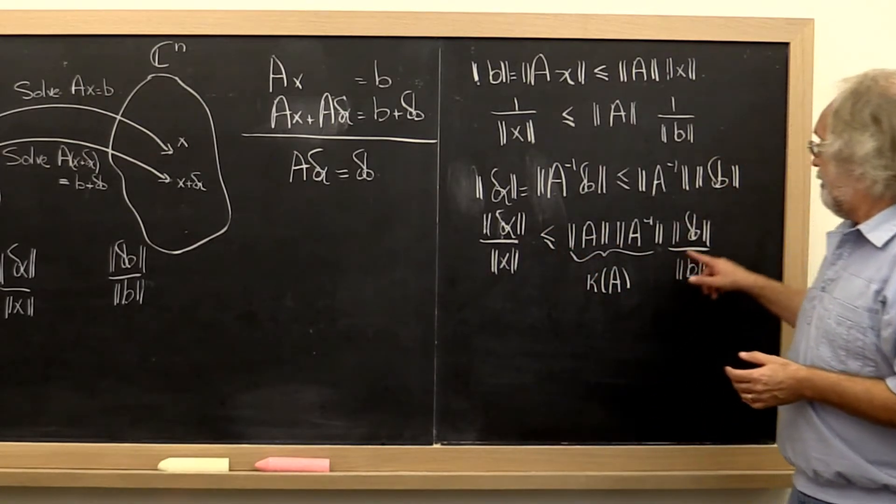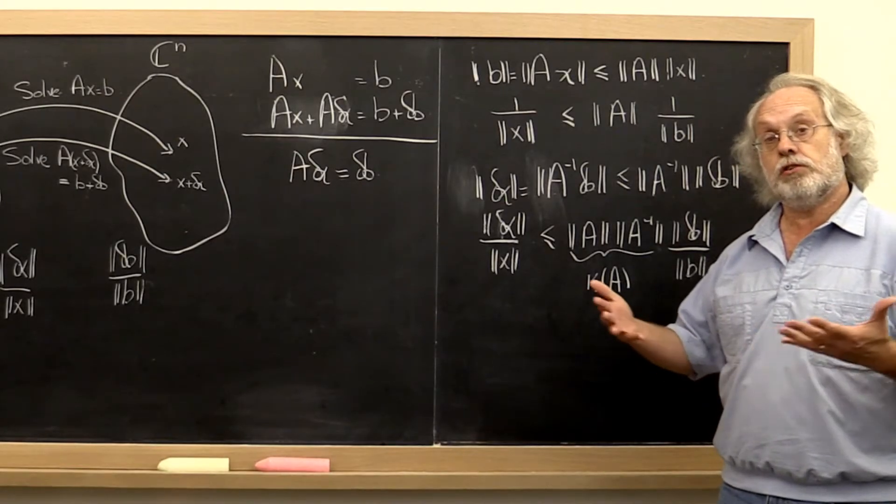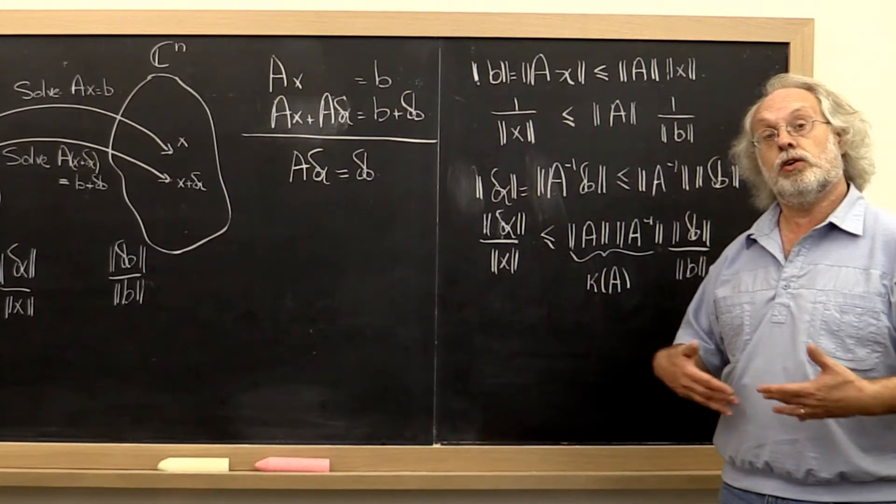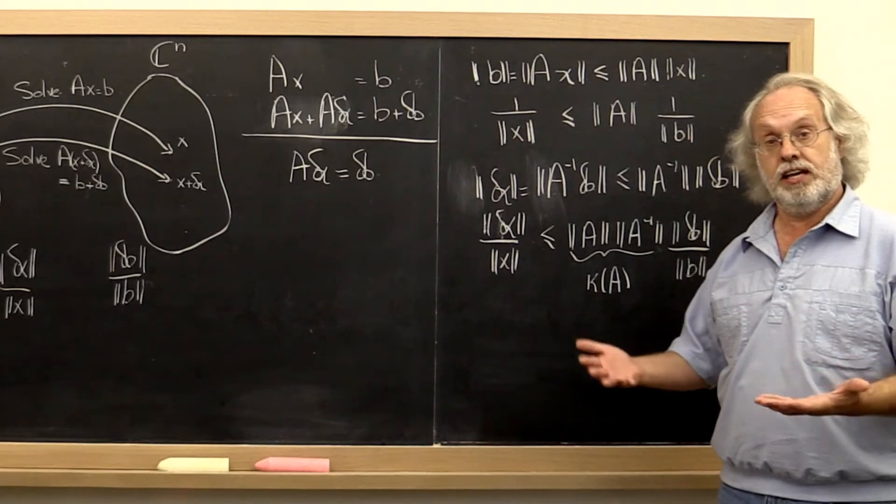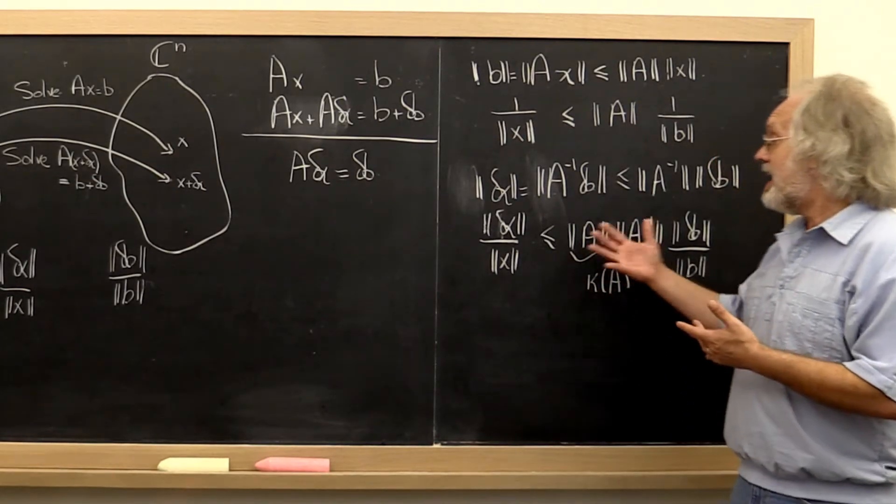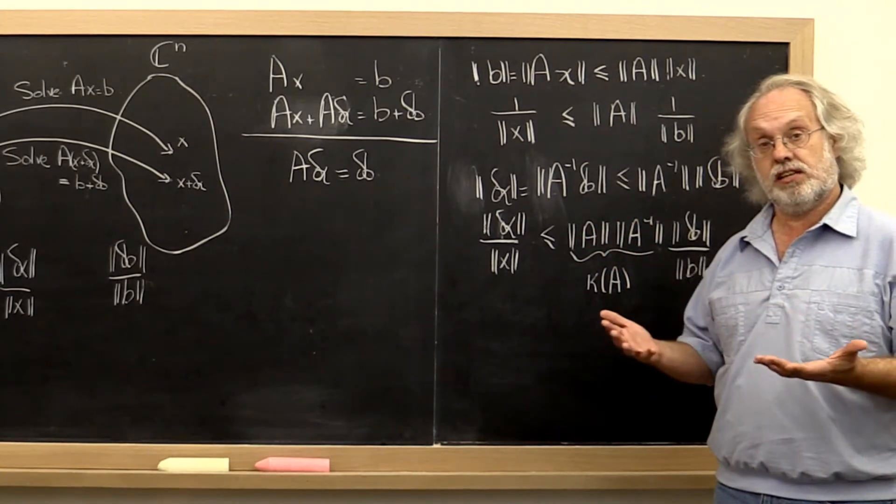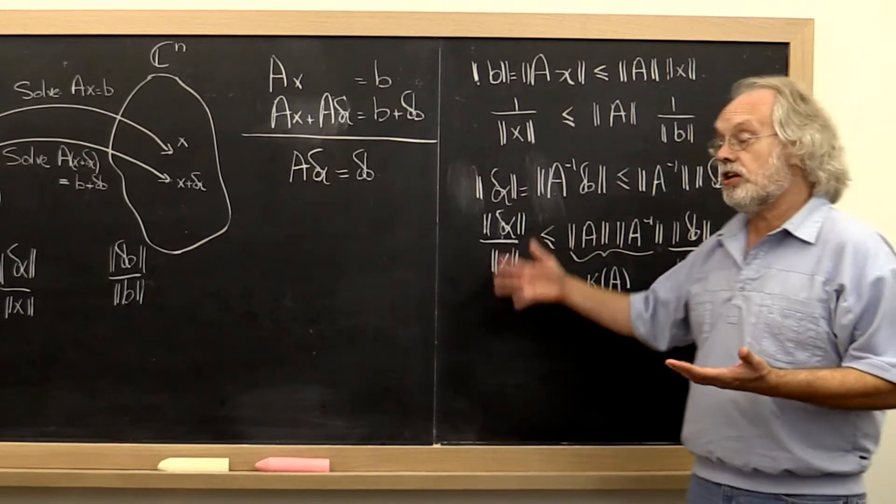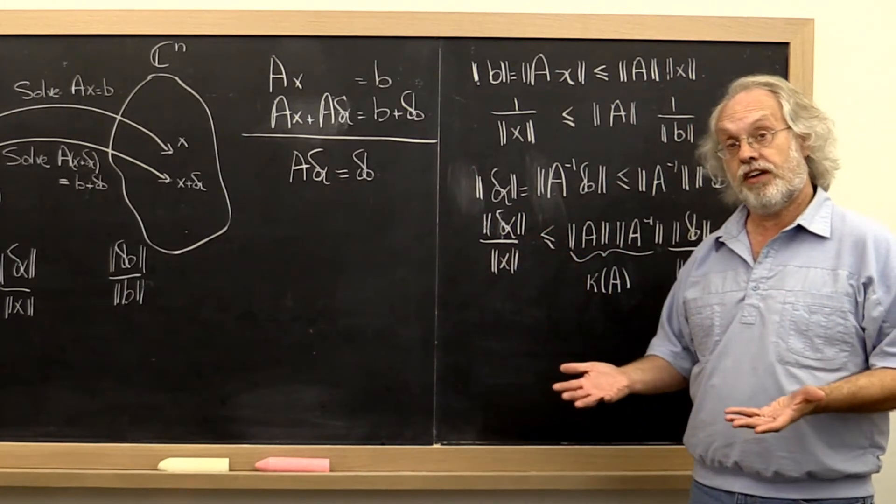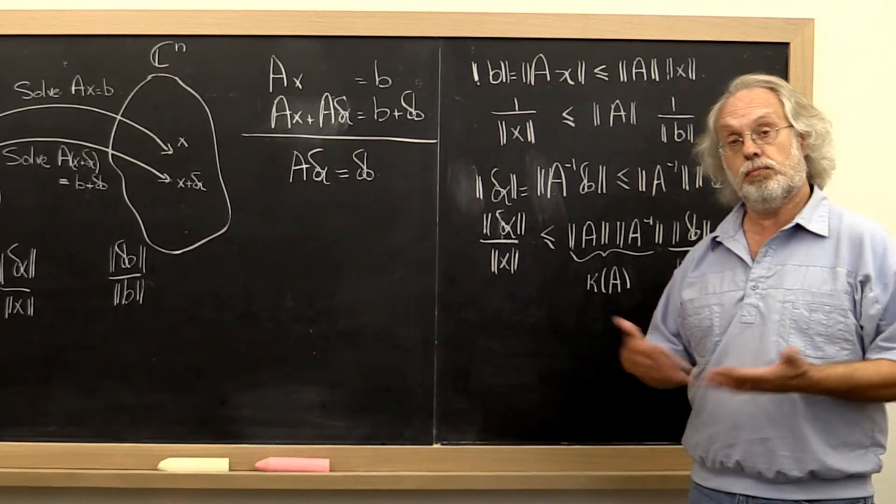So if you only started with six digits of accuracy, let's say that you didn't measure very well, and you only had six digits of accuracy in the data that represents the right-hand side of the matrix, and your linear system has a condition number of 10 to the sixth, then you potentially may lose six digits of accuracy, in which case the solution vector that you get is complete garbage.